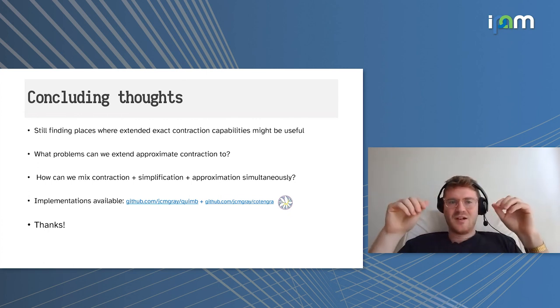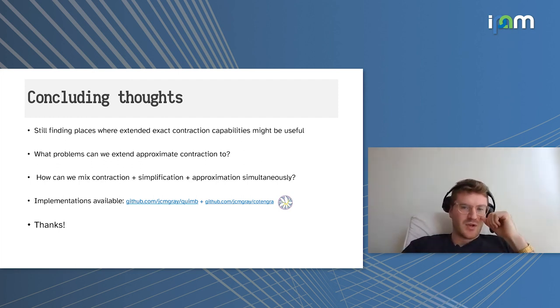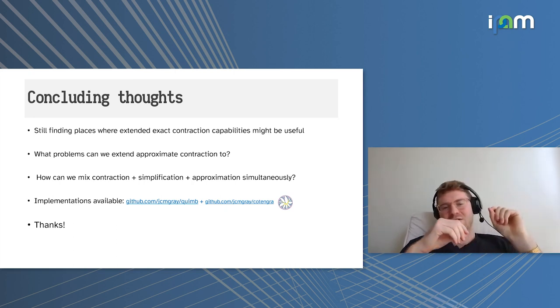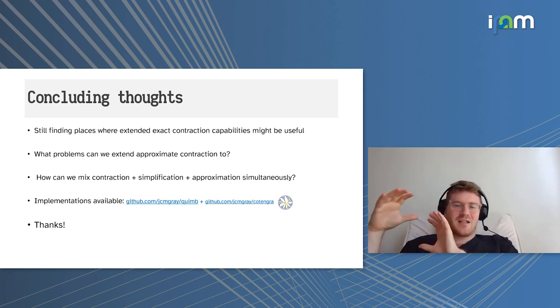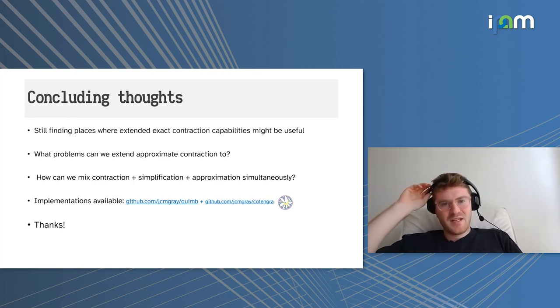With that, I'll conclude. We're still very much finding places where these new extended exact contraction capabilities might be useful, useful problems to apply them to, and to think about where we might extend approximate contraction to. A very tricky problem is rather than just thinking about the contraction and the simplification and these approximation methods as black box algorithms that work individually, can we actually mix them together? So, partially contract, partially do some simplification, and what do we get from doing that? I also just mention that if you want to play with any of these or use them, there's open source implementations as well. And with that, I'll say thanks.